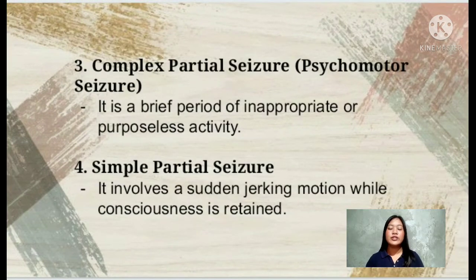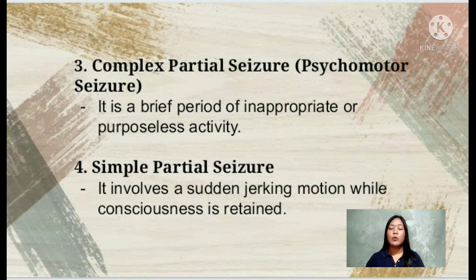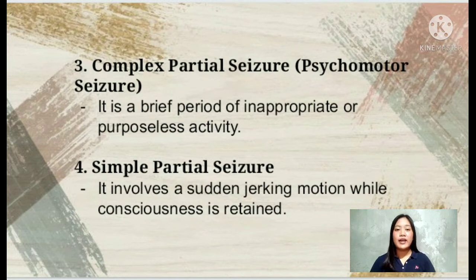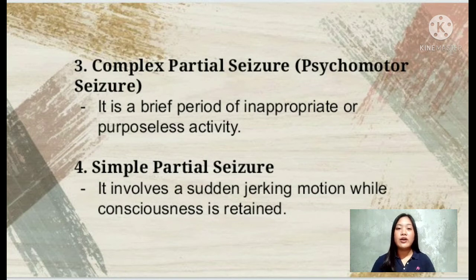The third kind of seizure is the complex partial seizure, also known as psychomotor seizure. It is a brief period of inappropriate or purposeless activity. Examples include smacking one's lips, walking aimlessly, and shouting. The last kind is the simple partial seizure, which involves a sudden jerking motion while consciousness is retained. One may experience an aura or a warning sensation before the seizure occurs.